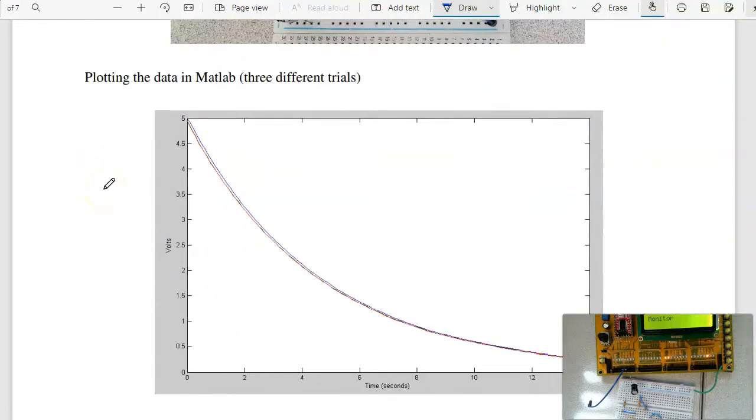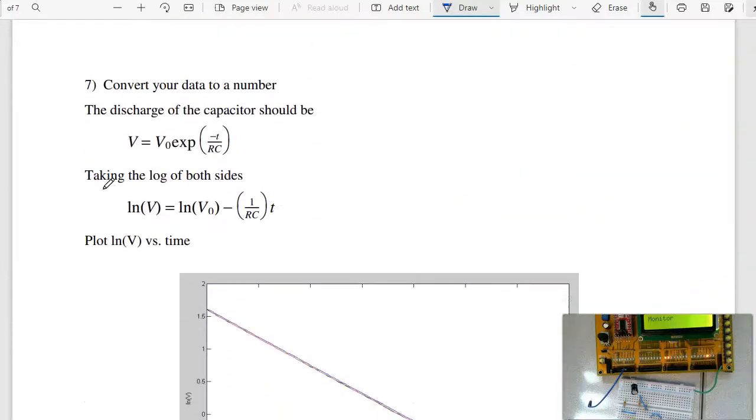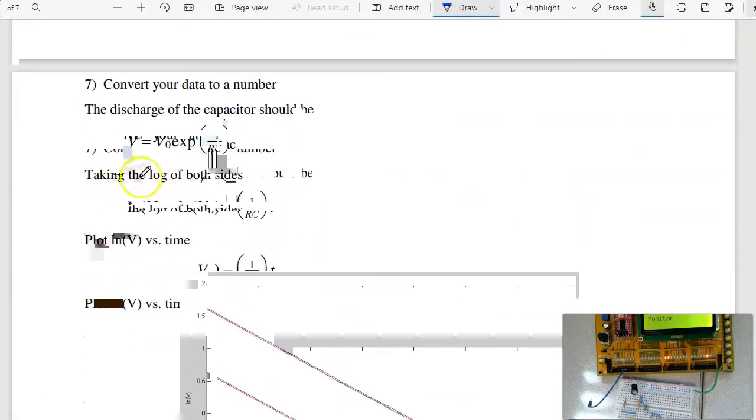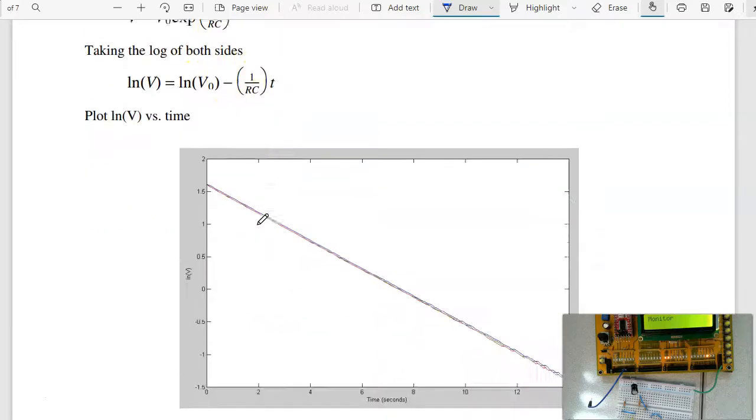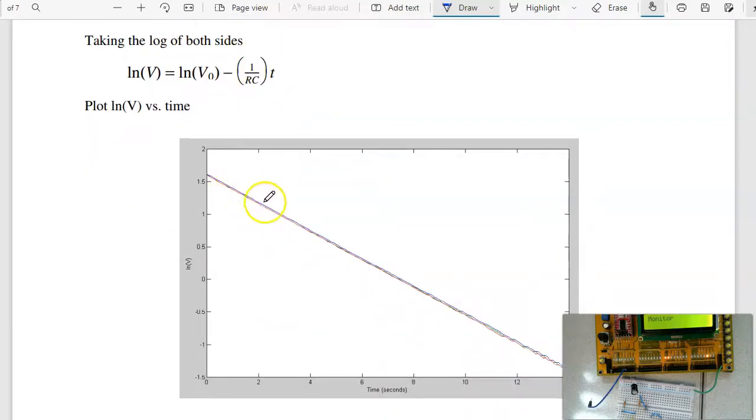So anyway, did that three times, and here's my three results. To convert that to a number, this decays exponentially. If I want to convert that to a straight line, I can take the log of both sides. So log of voltage, the log of A times B is log of A plus log of B, the log of V0 minus T over RC. So I should get a straight line. If I plot log of voltage versus time, and sure enough, I get a straight line.